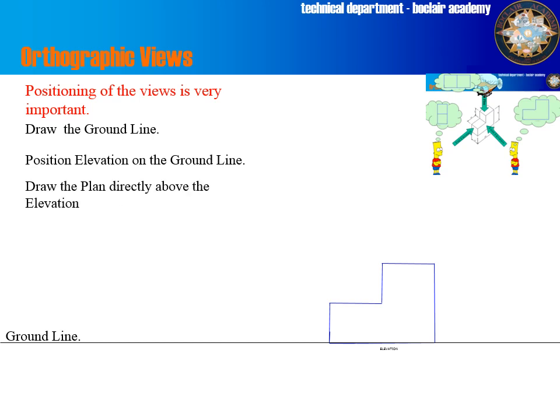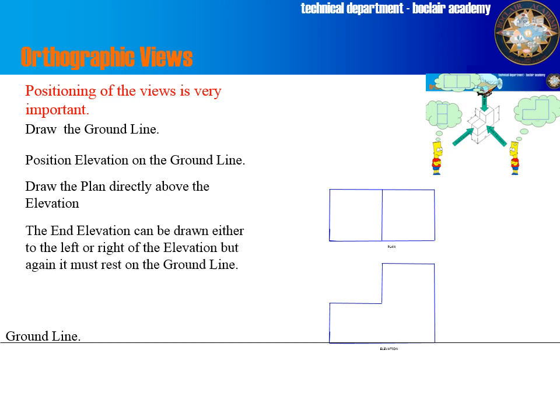So the next thing that we're going to do is draw the plan. Now the plan, as we saw, you have to be directly above the block to see that. So what we do is we draw it directly above the elevation. Now notice that it's the same size. So the overall length of the plan is the same as the overall length of the elevation. And where there's a little step, the line on the plan lines up with them perfectly.